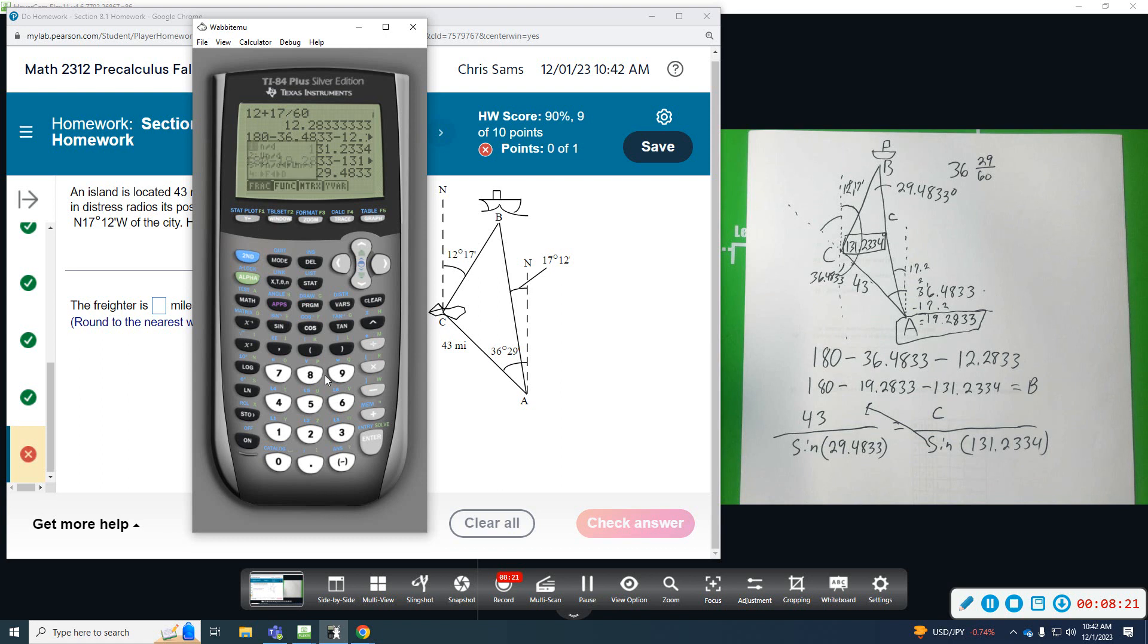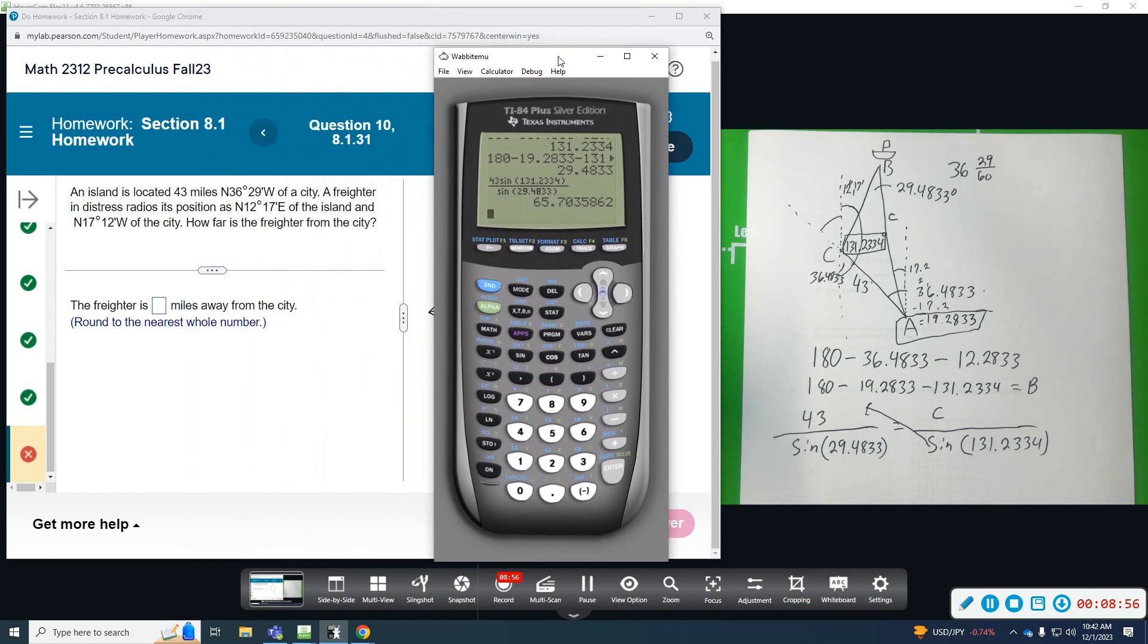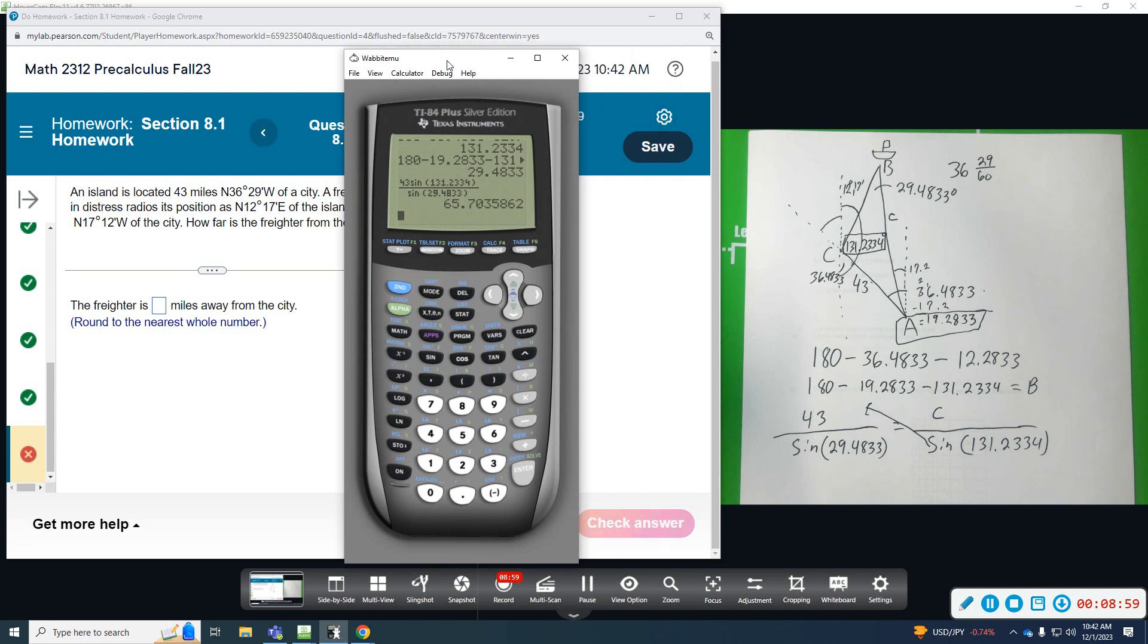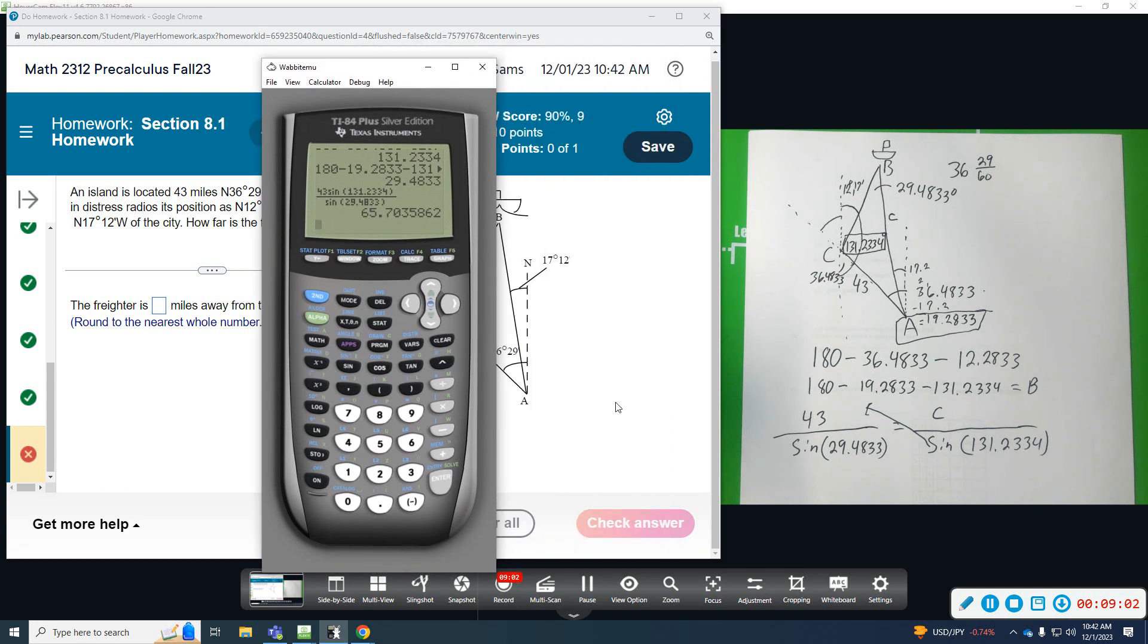So, I'm going to set up 43 times the sine of 131.2334, and that is over sine of 29.4833. And that gives us a distance of 65.7, and we want to round to the nearest whole number, so we're going to round this one to 66 miles. So, we're giving that, that is 66 miles away.